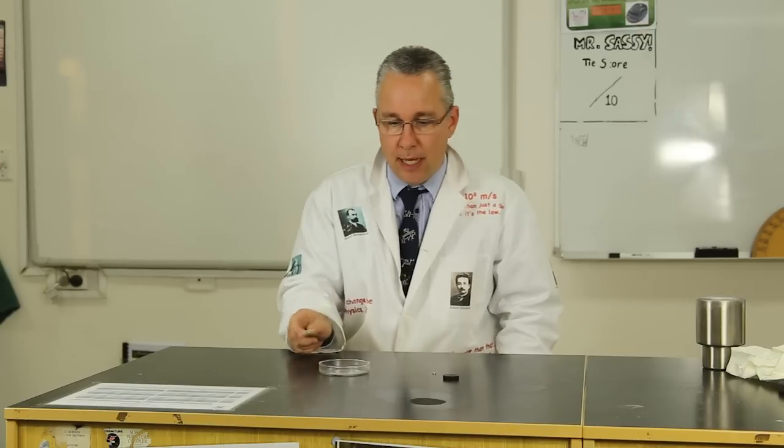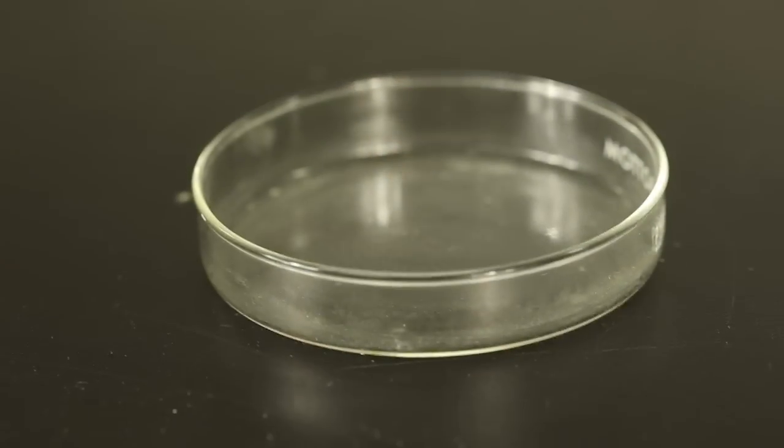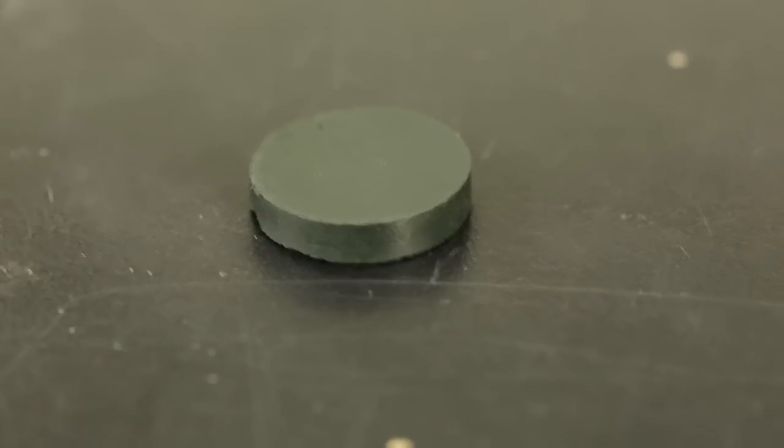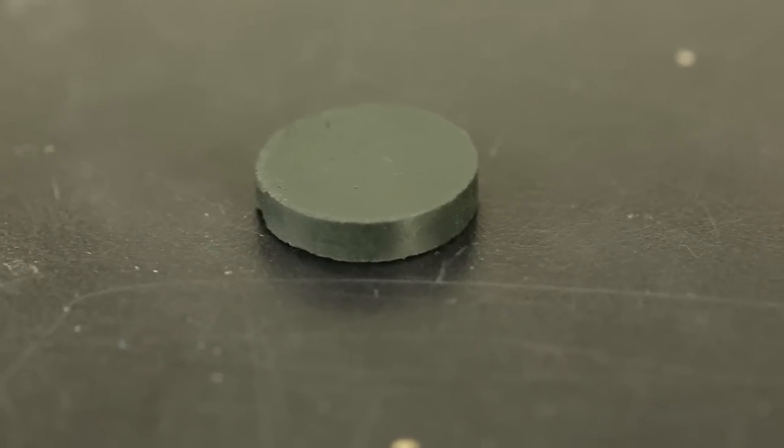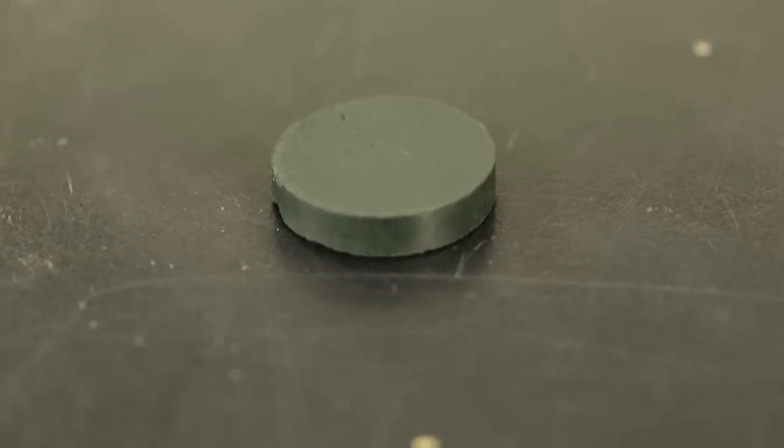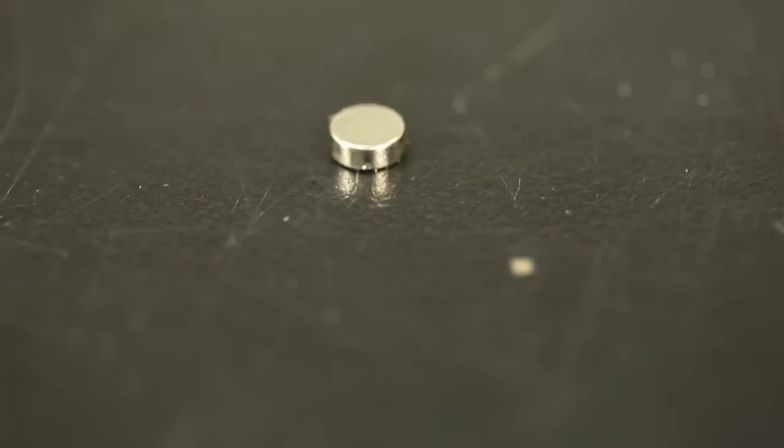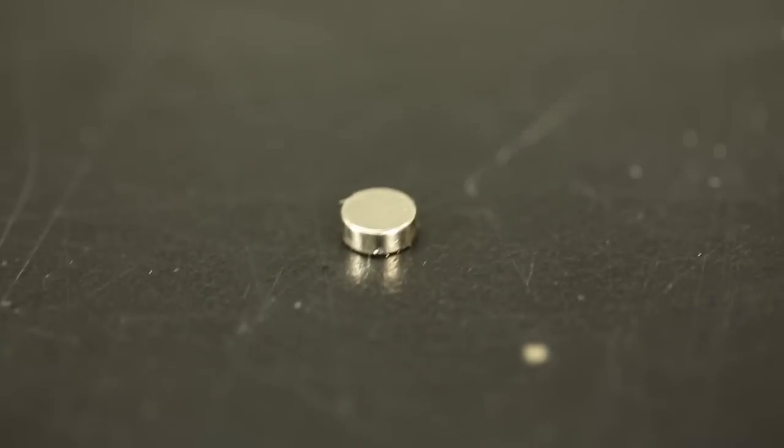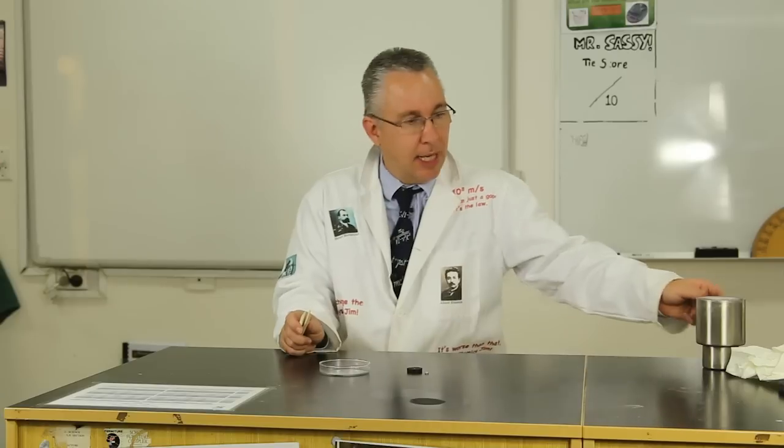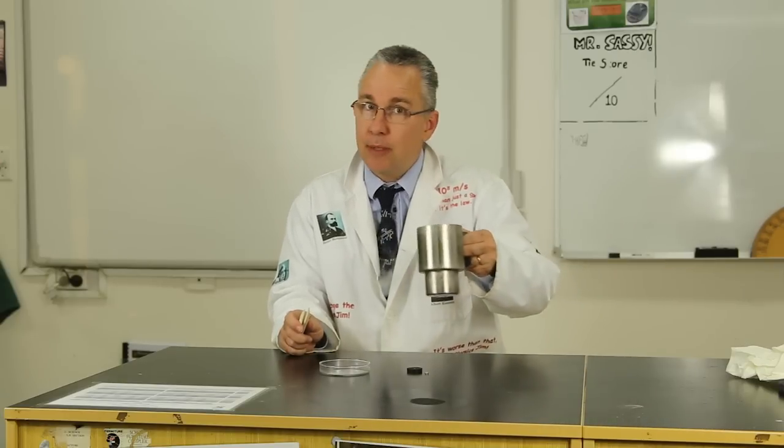So in front of me I have a dish, a Petri dish. I have a disc here that looks fairly ordinary but actually is a type 2 superconductor, and I have a small rare earth magnet over here and some liquid nitrogen up to the side.